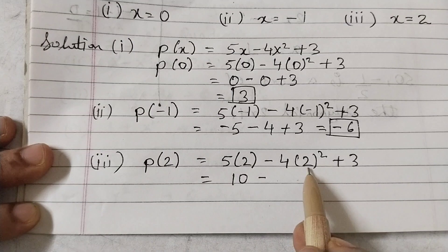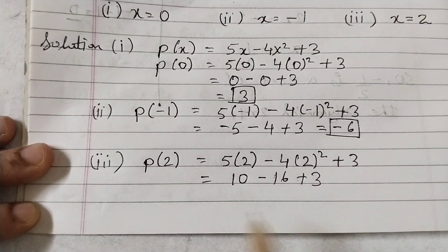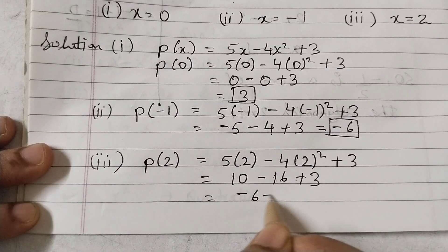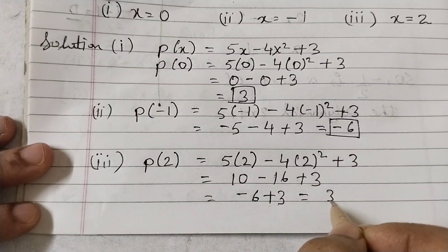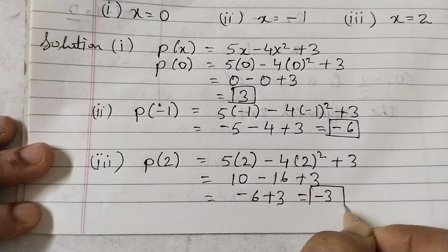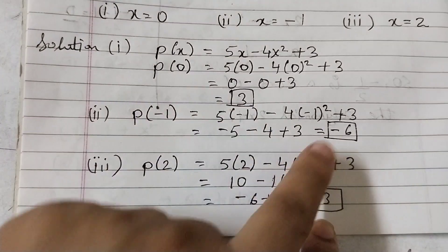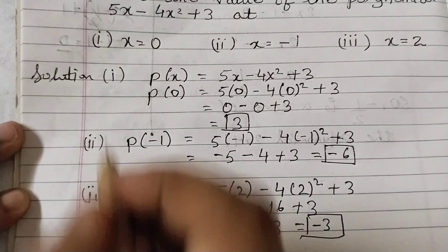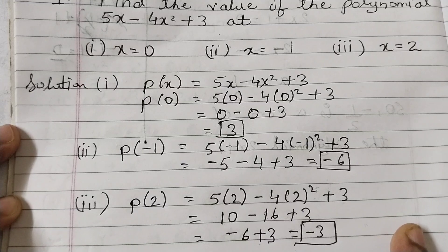16 plus 3. 10 minus 16 is minus 6 plus 3, so that equals to 3, sorry minus 3. That is for the third one. So it is 3, minus 6, and minus 3. So just substitute these numbers in place of x and you will get your solution.